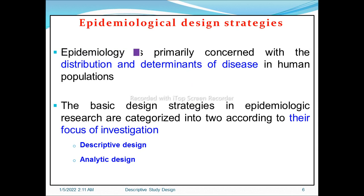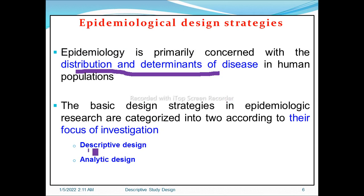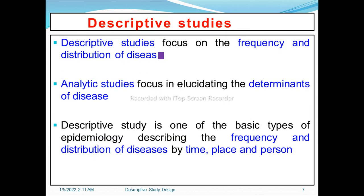Epidemiology is primarily concerned with the distribution and determinants of disease in human populations. The basic design strategies in epidemiological research are categorized according to their focus of investigation. Epidemiological study designs can be classified into descriptive design and analytic design. Descriptive studies focus on the frequency and distribution of disease, while analytic studies focus on elucidating the determinants of disease.